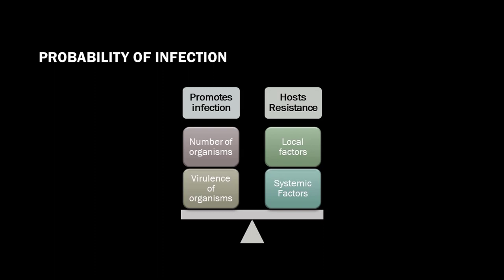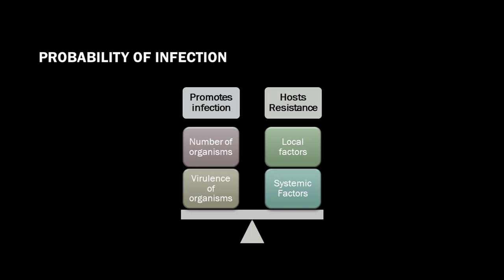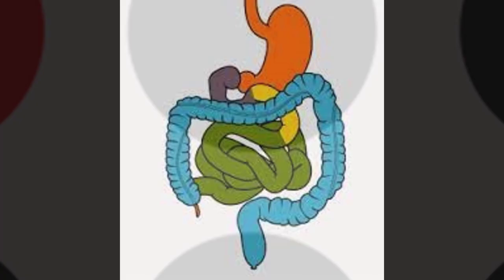Systemic factors would include immunocompromise from a variety of sources, such as malnutrition, defects in humoral immunity, which refers to antibodies, and defects in cell-mediated immunity, which refers to T cells. Other factors such as cancer, chemotherapy, radiation therapy, and immunosuppressive drugs, like those used to treat Crohn's disease, ulcerative colitis, and various types of arthritis, can suppress the immune response.